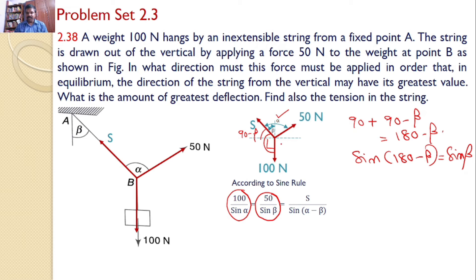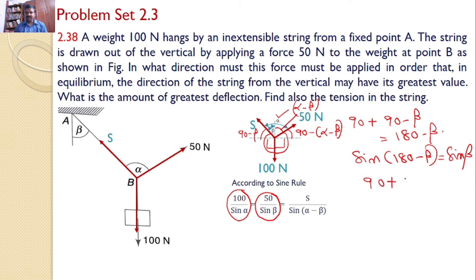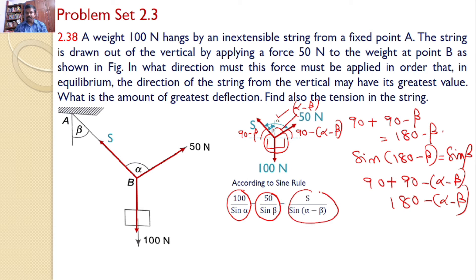How much is that angle? Clearly this portion is 90 degrees. The total angle is alpha and this portion is beta, so this part is alpha minus beta. Hence the remaining angle is 90 minus (alpha minus beta), and the full angle between the 100N and 50N forces becomes 90 plus 90 minus (alpha minus beta), which is 180 minus (alpha minus beta). Since sine(180 minus (alpha minus beta)) equals sine(alpha minus beta), we write S divided by sine(alpha minus beta).